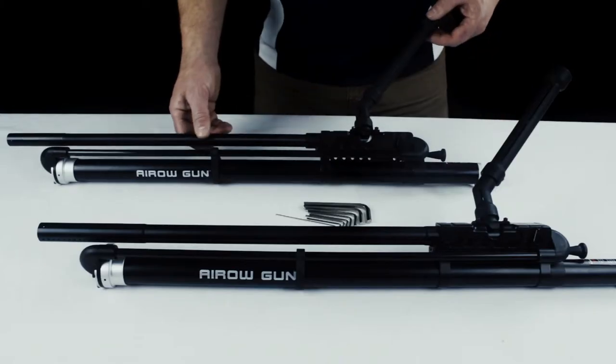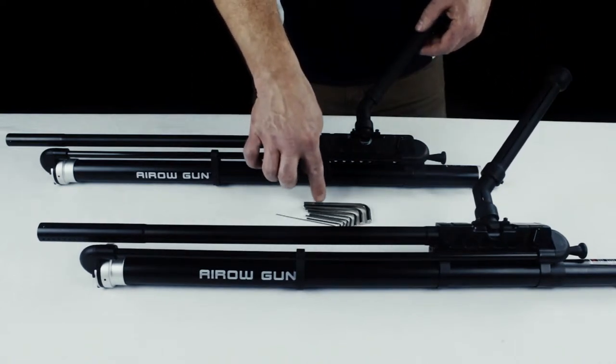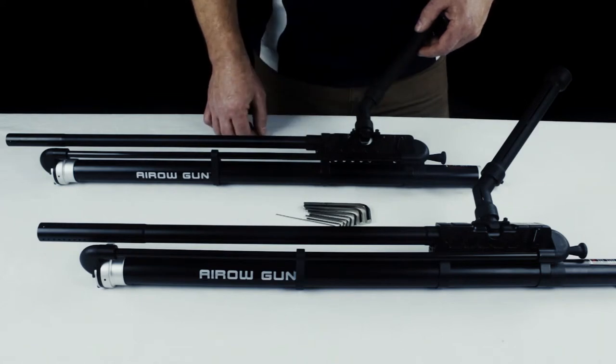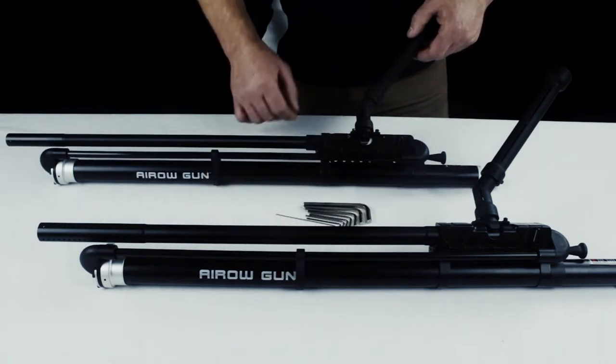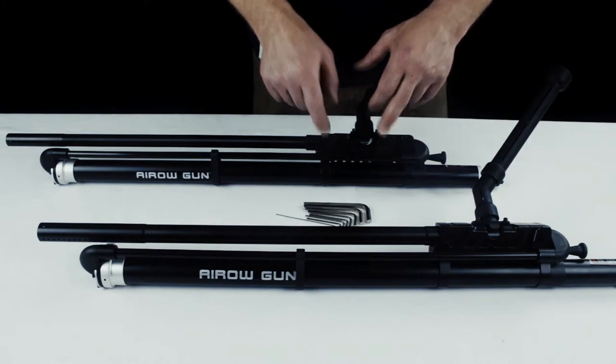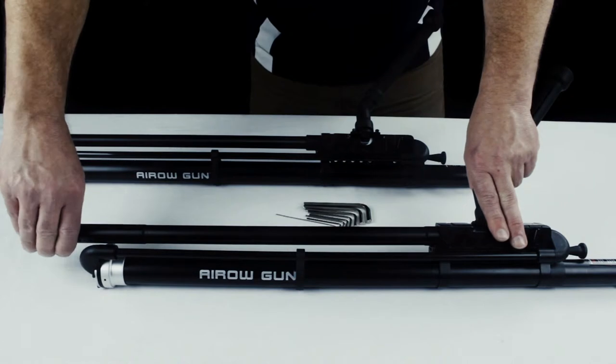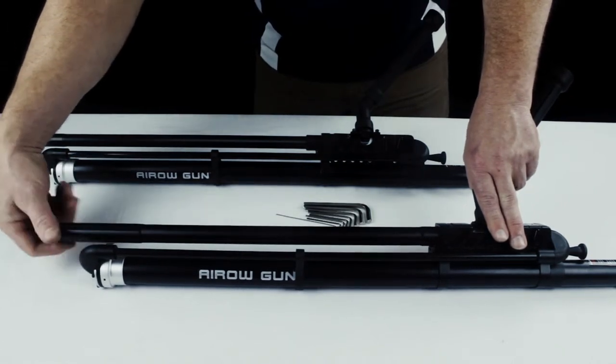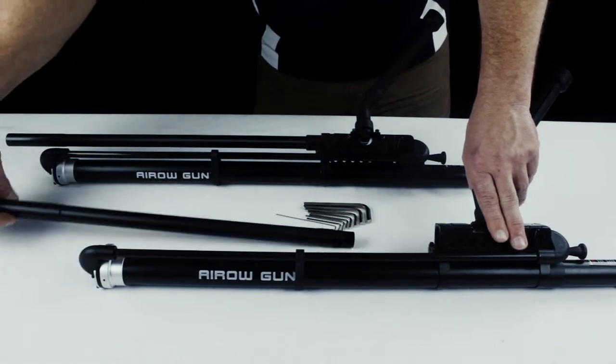Before we start disassembling our 50 cal or 68 cal version of the AeroGun, make sure to access your metric Allen key set. It's included with each version. Now all AeroGuns, as you can see here, are built off of the same air chamber. And to get the receiver off of this air chamber, we need to first remove the barrel. The barrels twist out. So remove your barrel from the 68 cal version here. Set it to the side.